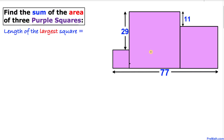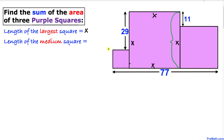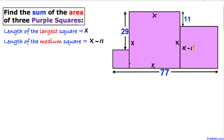Let's focus on the length of the largest square, which is the middle one. I'm going to call it x units. Since the square has all equal lengths, each side is x. Now let's focus on the medium square on the right-hand side. The total length is x units and this segment is 11, so the side of the medium square is x minus 11.